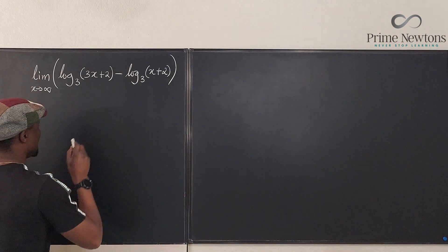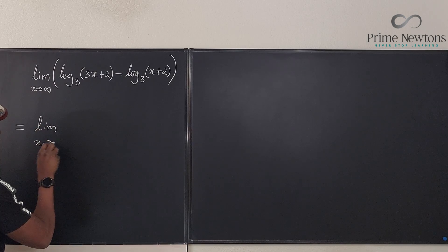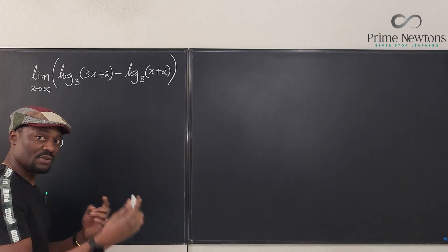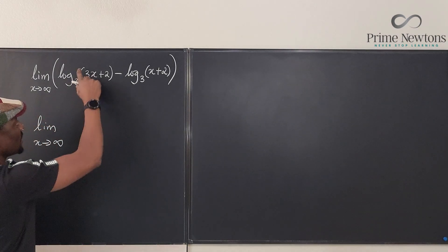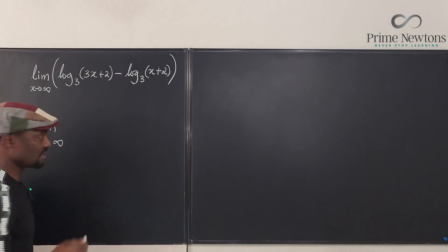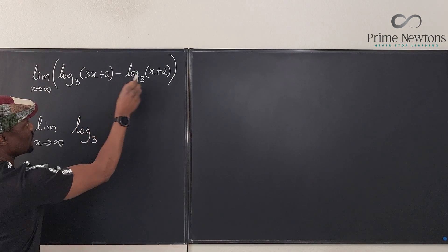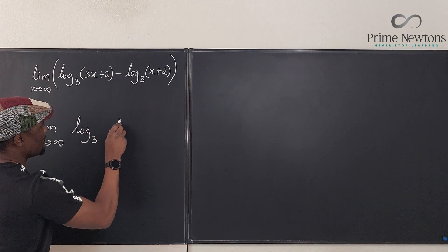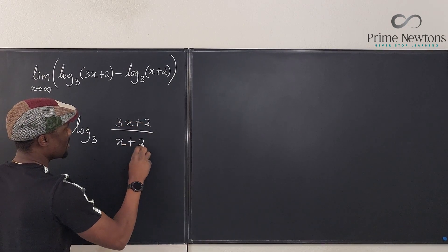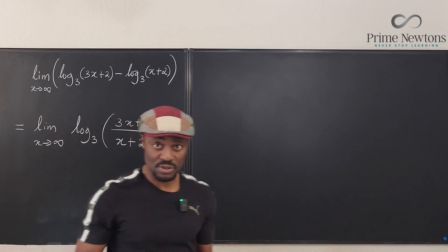So what I'm going to do is say that this is equal to the limit as x goes to infinity. I'm going to combine these two together because remember, the law of logarithm says that you can combine these two together if they have the same base. So I can write this as the logarithm of three, and then this would be divided by this. This is going to be 3x plus 2 over x plus 2.